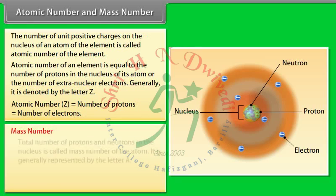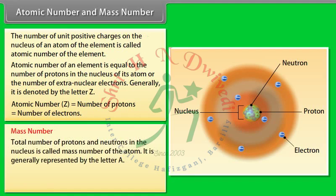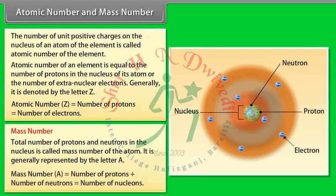Mass number: The total number of protons and neutrons in the nucleus is called the mass number of the atom. It is generally represented by the letter A. Mass number A = number of protons + number of neutrons = number of nucleons.